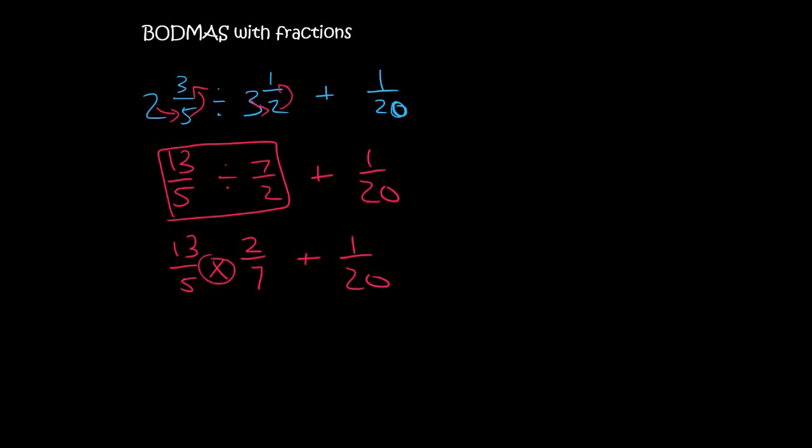So now we don't need a common denominator. Why? Because we are multiplying. Nothing really cancels here. This isn't really nice. So 13 and 7 can't cancel and 2 and 5 can't cancel. So now we just go across. So that becomes 26 over 35 plus 1 over 20.